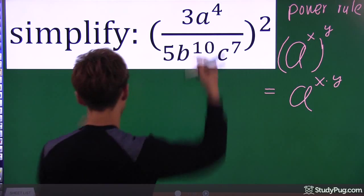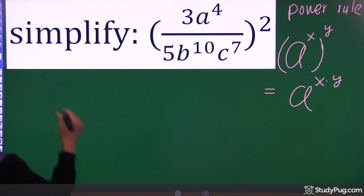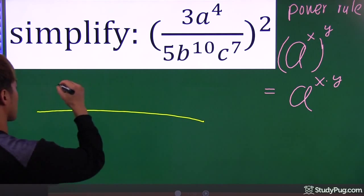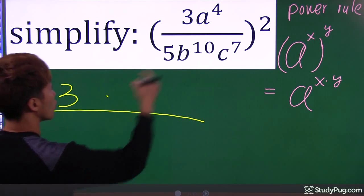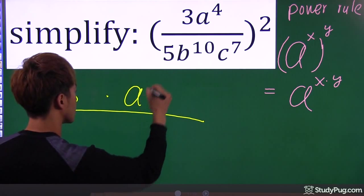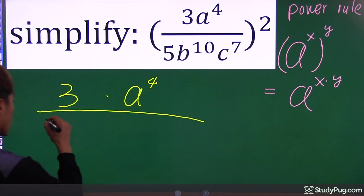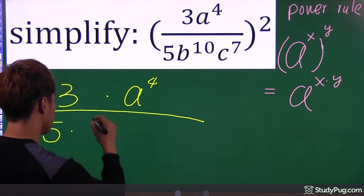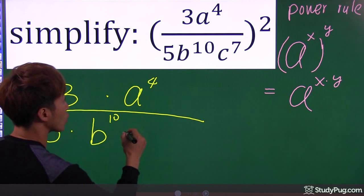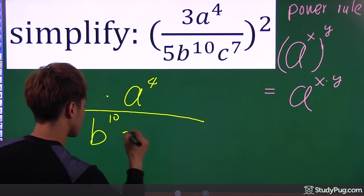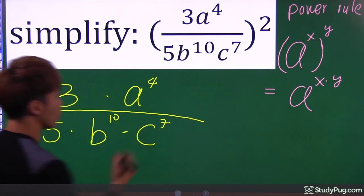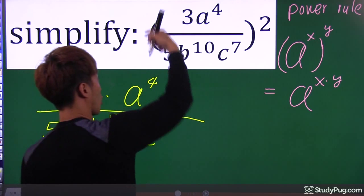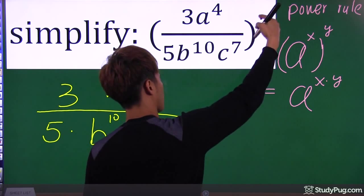That's what we're going to do here. The question we have: 3, we also have a to the power of 4. On the bottom we have 5, we also have b to the power of 10, and we also have c to the power of 7. The question says we want the whole thing to the power of 2.